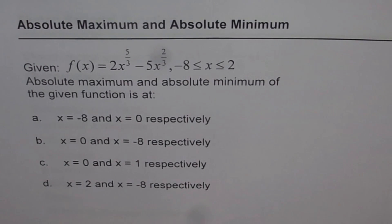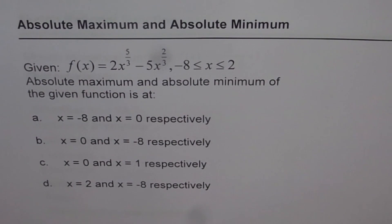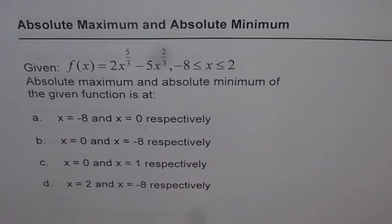Find the absolute maximum and absolute minimum of f(x) = 2x^(5/3) minus 5x^(2/3), where x is greater than or equal to minus 8 but less than or equal to 2. Four options are given to us.